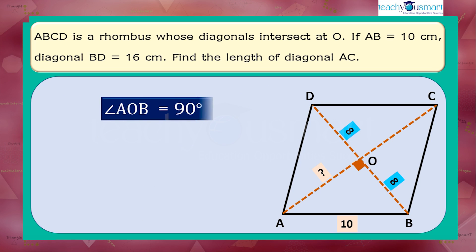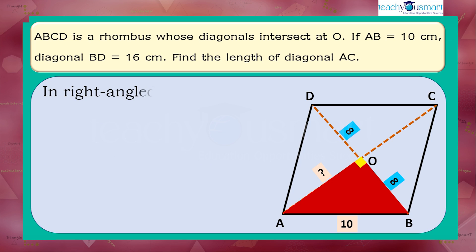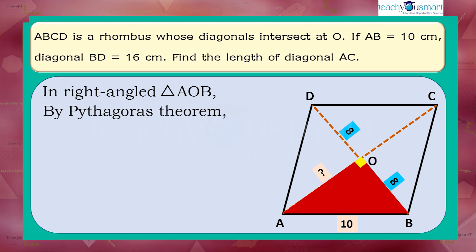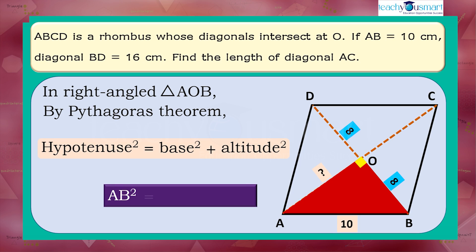Also, angle AOB equals 90 degrees, so triangle AOB is a right-angled triangle. This is the key point for finding the length of diagonal AC. Since triangle AOB is a right-angled triangle, we can apply the Pythagorean theorem: hypotenuse squared equals base squared plus altitude squared, that is AB squared equals AO squared plus OB squared.